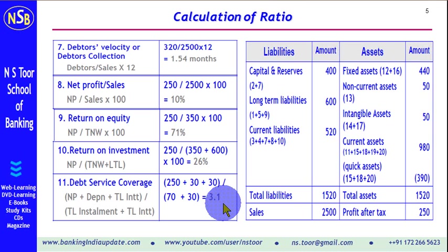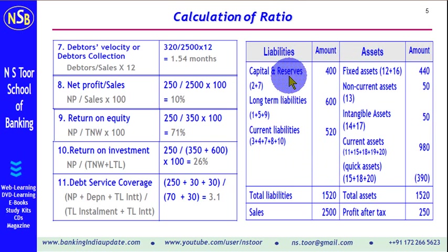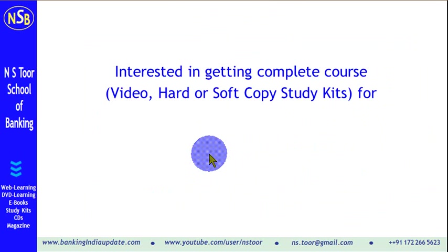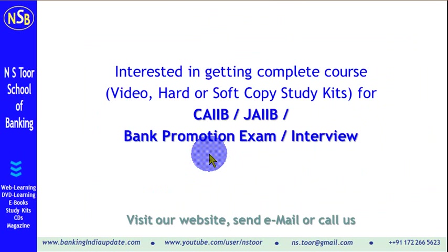Whenever large information is given, it is best to first classify the assets and liabilities, then convert that classification into a summary, so that the summary information can be used for calculation of the ratios. Thank you for watching the video.